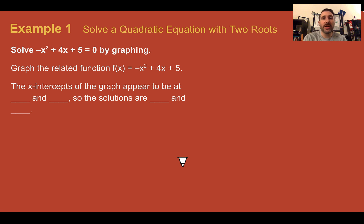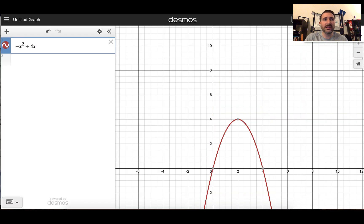Example one, solve a quadratic equation with two roots. So solve negative x squared plus 4x plus 5 equals zero by graphing. So let's graph the related function f of x equals negative x squared plus 4x plus 5. To do that, let's head over to Desmos.